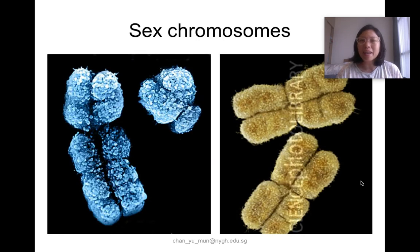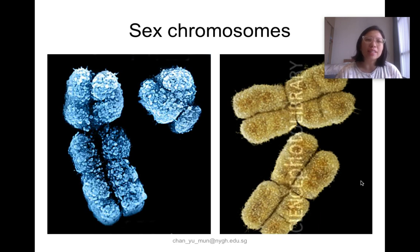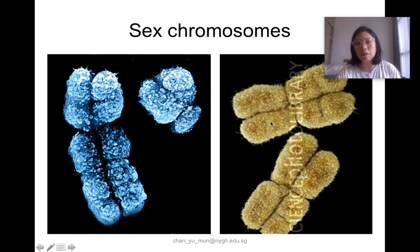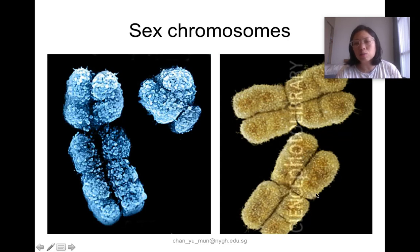Looking at some electron micrograph images — artificially colored — on the left-hand side colored blue, you can see the X chromosome is significantly larger than the Y chromosome, which is smaller. This has certain implications when we cover sex-linked genes. A person assigned female will have two X sex chromosomes, as shown in the image on the right-hand side colored yellow — two large X chromosomes.